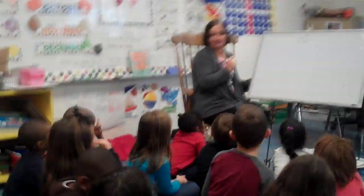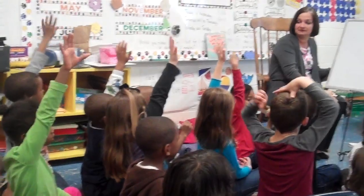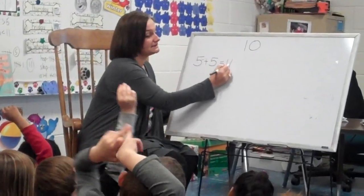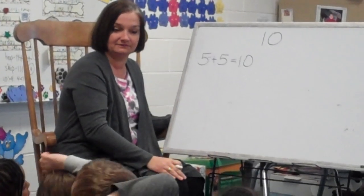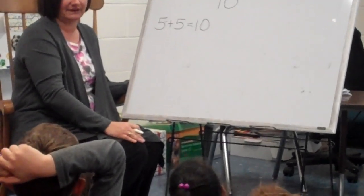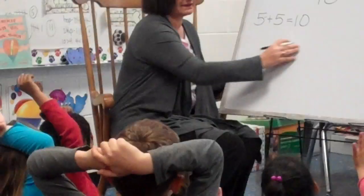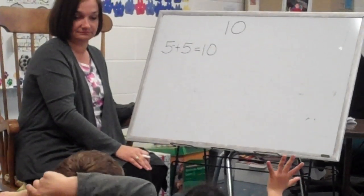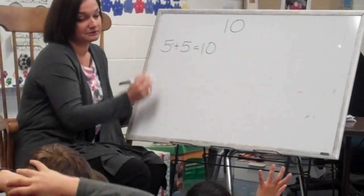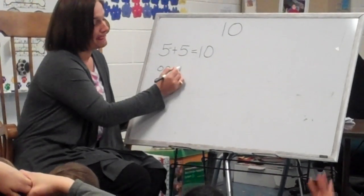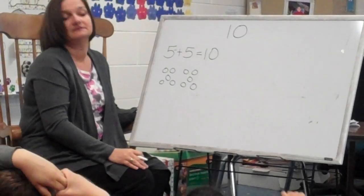Is 10 one of our benchmark numbers? Yes. Raise your hand if you've got something great to say about the number 10. Hunter? 5 plus 5 is 10. Exactly, 5 plus 5 equals 10. What's another way I can represent 5 and 5? Can I make circles? So we can make how many circles? 10. I've got to make 5, and another set of 5, and when I put them all together, what am I going to have? 10. Very good.